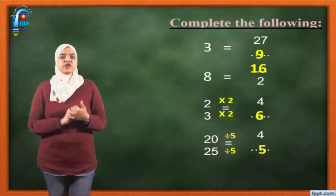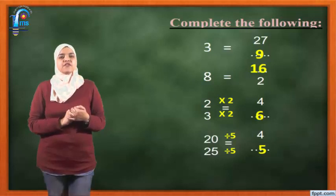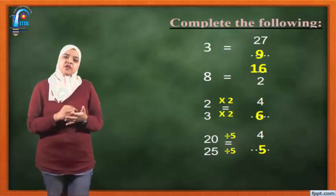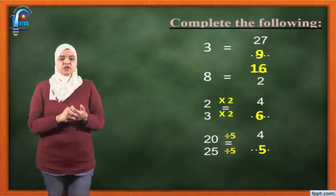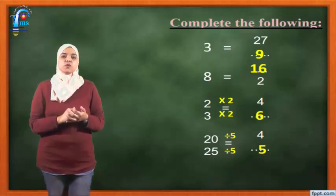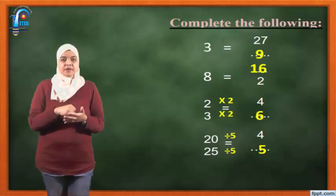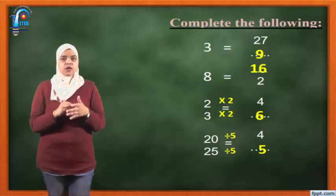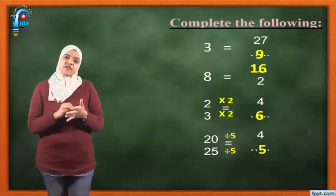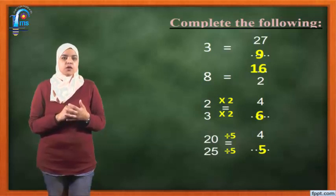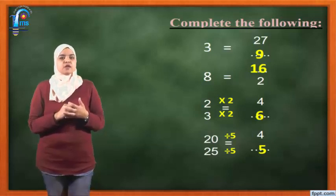The first question here: complete the following. 3 equals 27 over what? Here, the missing number is the denominator number. So 27 divided by 3 equals 9. If the missing number is the denominator, I'm going to use the division sign.